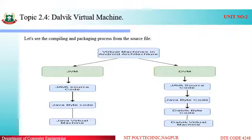This Dalvik byte code is given to the Dalvik Virtual Machine, which then converts it into the .apk file — our application file — that runs on Android mobile devices. So in summary: JVM converts the Java class file into Java byte code, and then DVM converts the Java byte code into Dalvik byte code, which is again processed by DVM into the final .apk file.